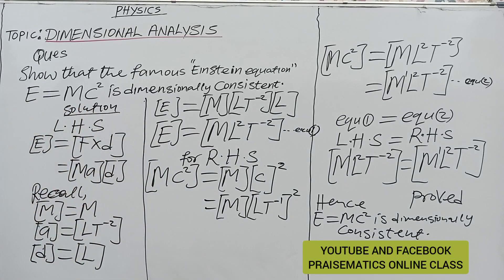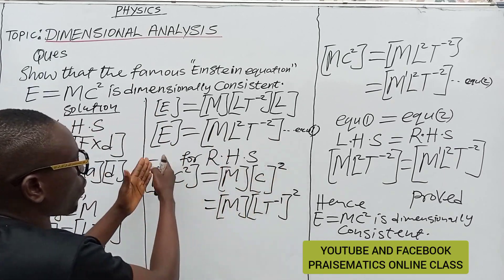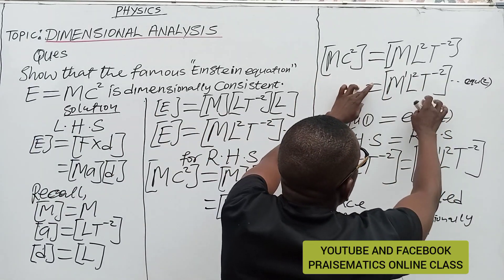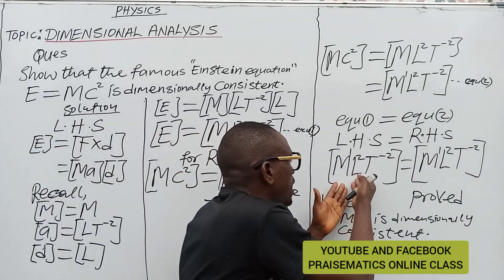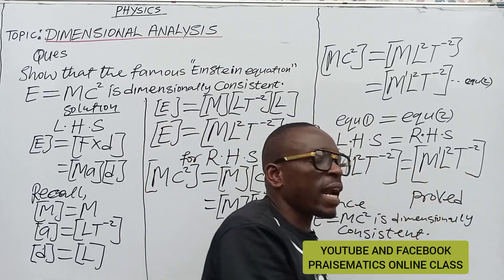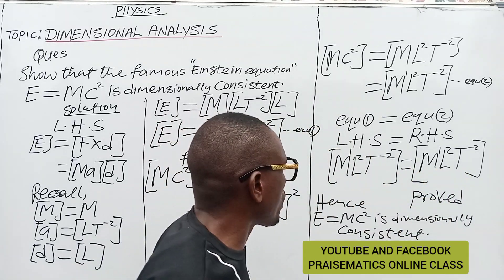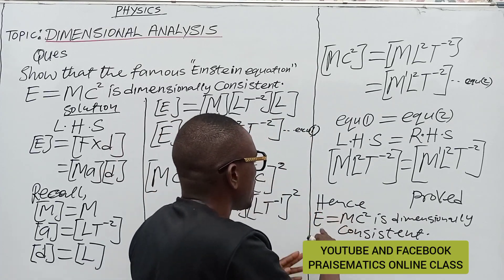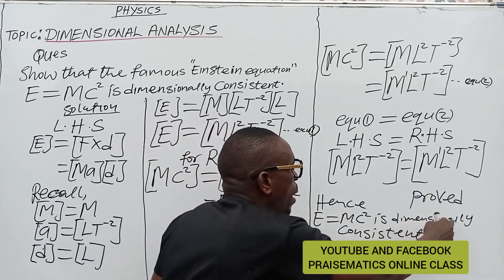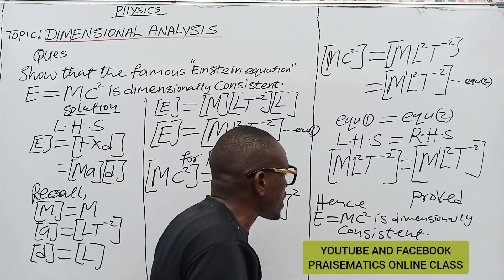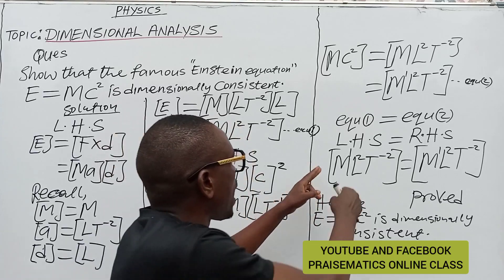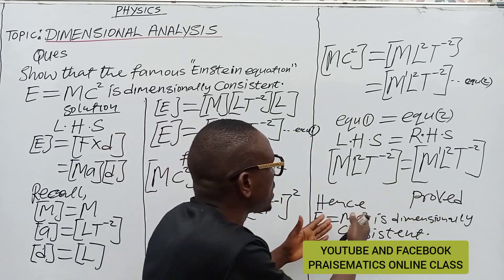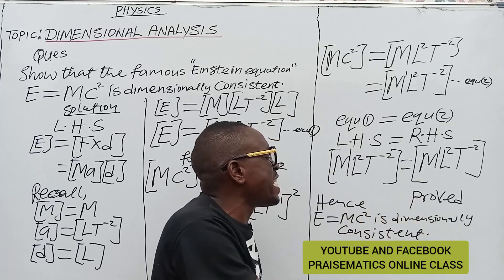In summary: you solve for the left-hand side to get equation 1, solve for the right-hand side to get equation 2, then equate them. If what is on the left-hand side equals what is on the right-hand side, you can say the Einstein equation is dimensionally consistent or dimensionally correct. If they are not equal, you would say the equation is dimensionally inconsistent.